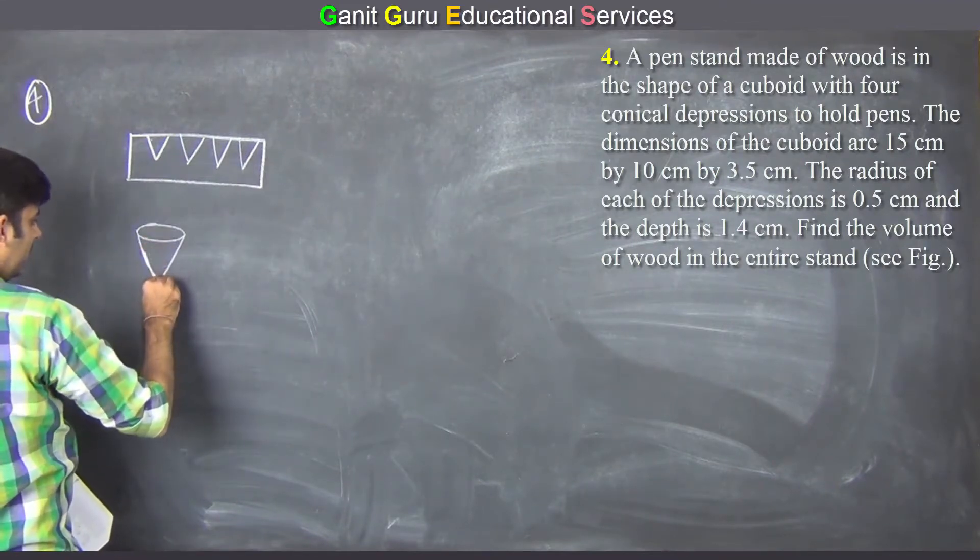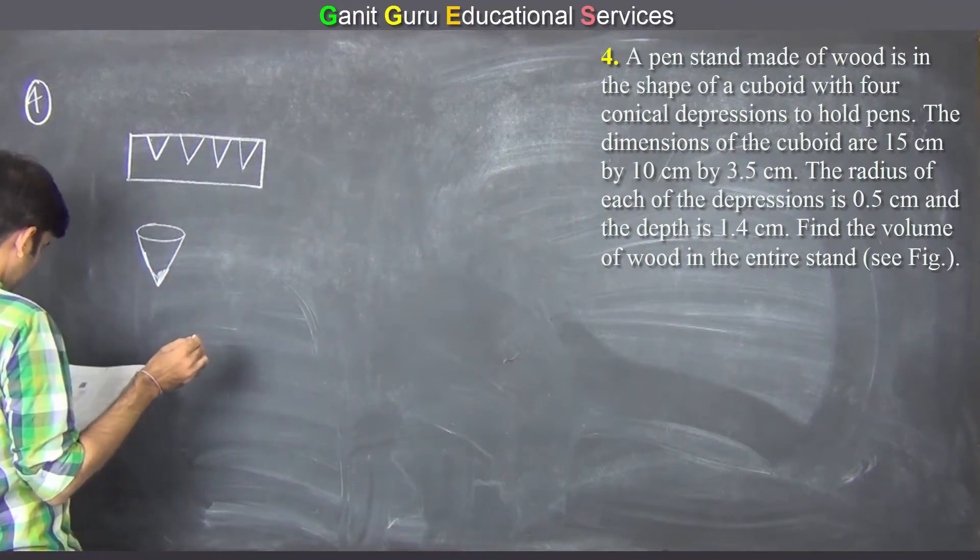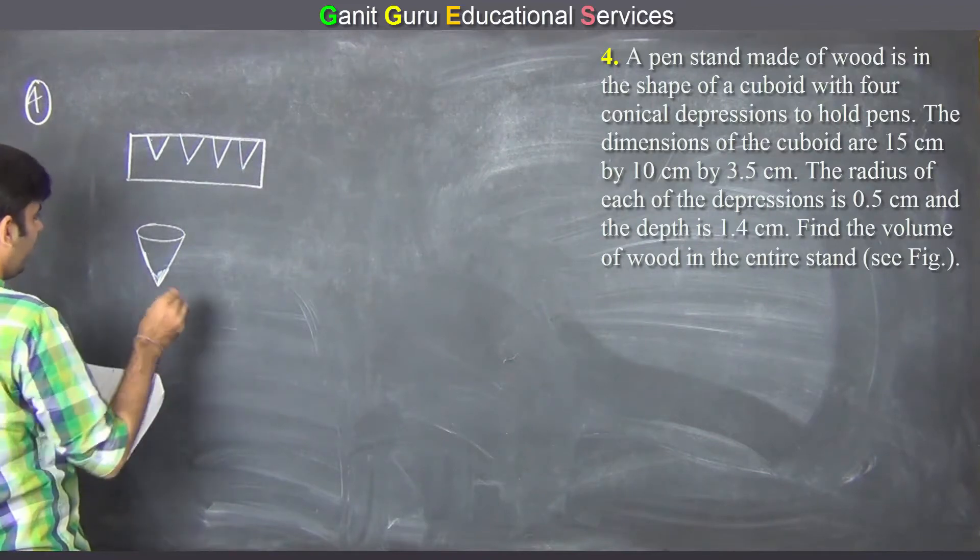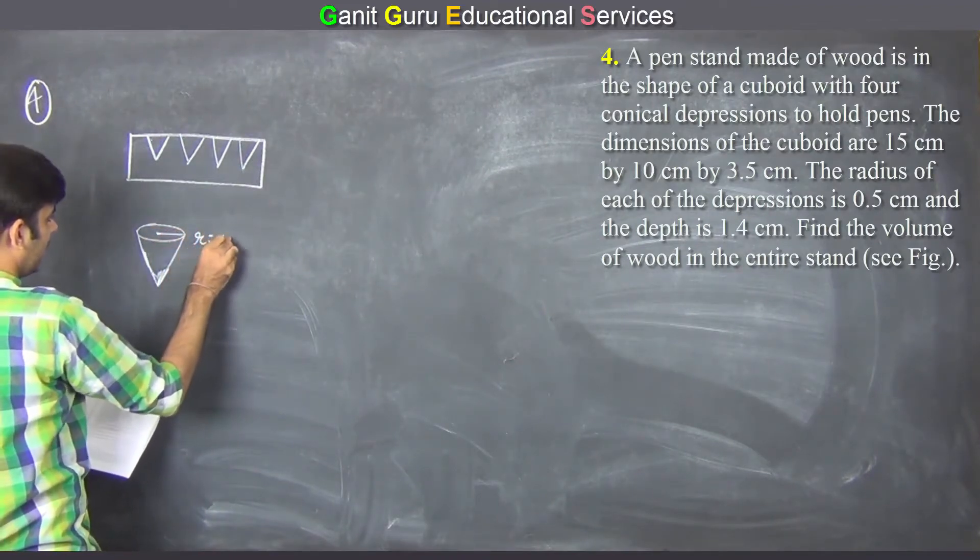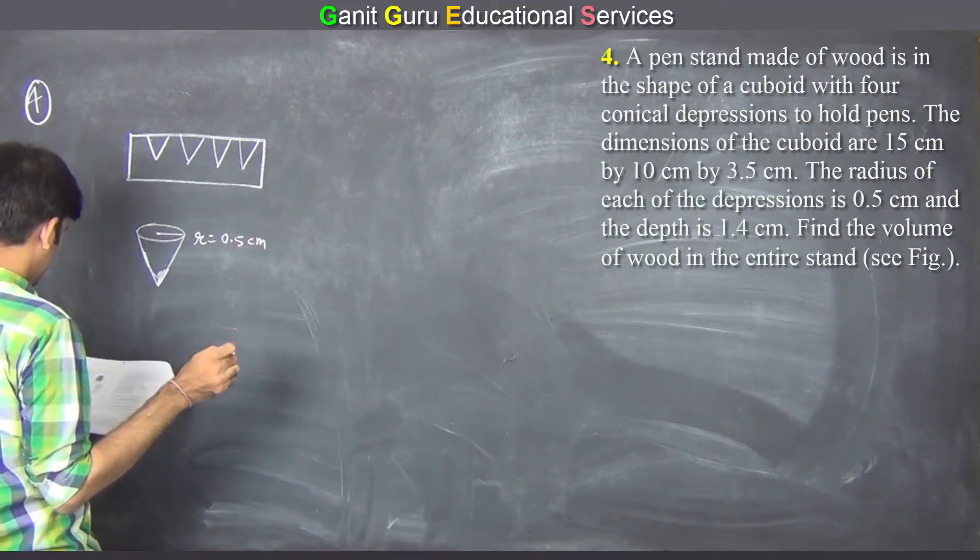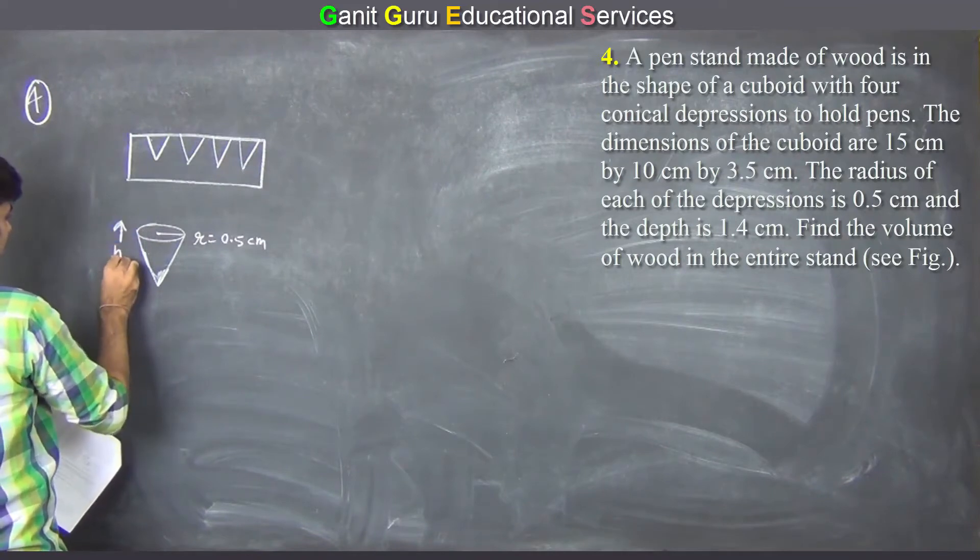This is cone, radius of each of the depression is 0.5 cm. This is a radius. Depth is 1.4. This is a height.